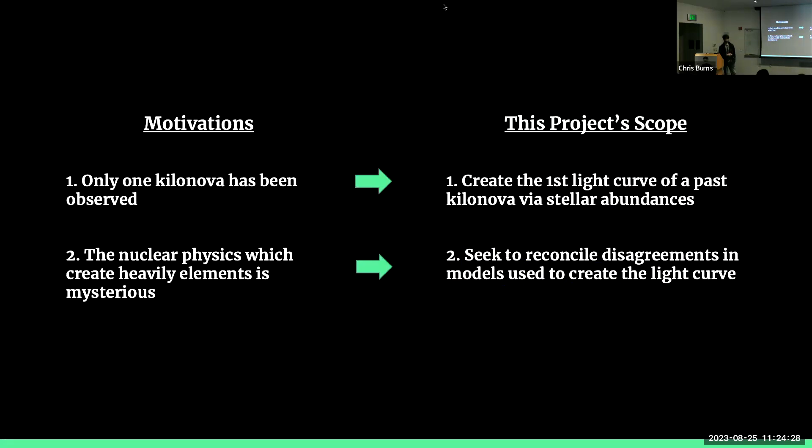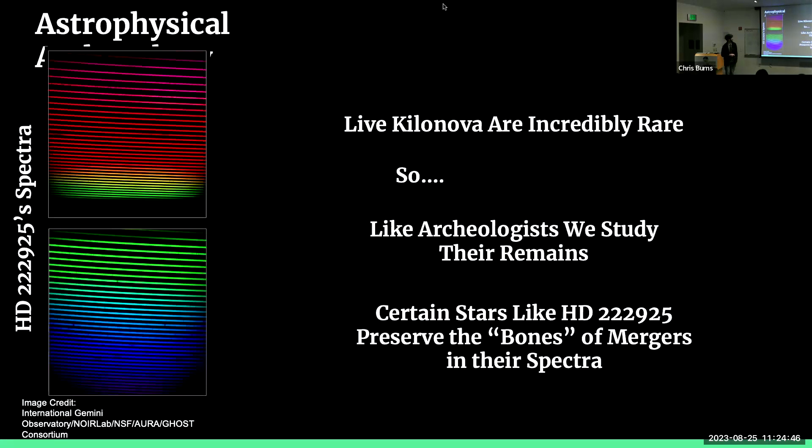And so we want to understand this so we can understand how we get this periodic table that exists in the actual world, which informs the project. Number one is to create the first light curve of a past Kilanova via stellar abundances. And after we do that, we seek to reconcile some disagreements in the nuclear models which create our light curve and those observed abundances.